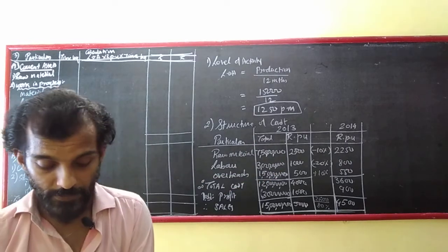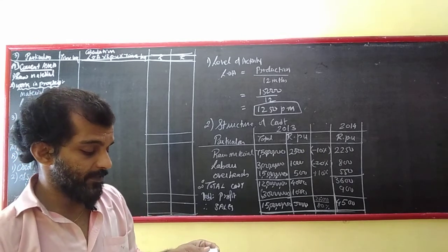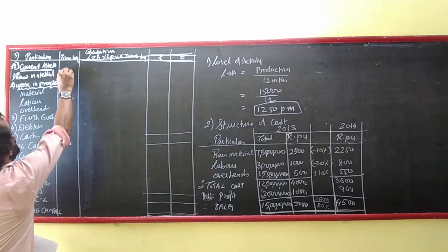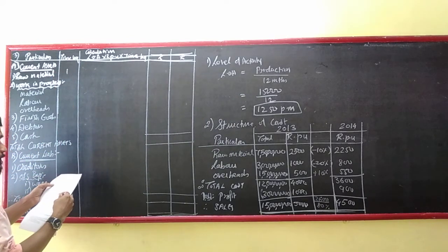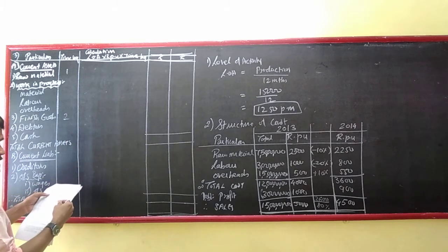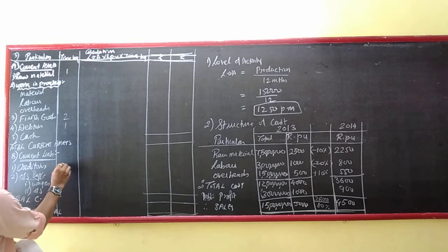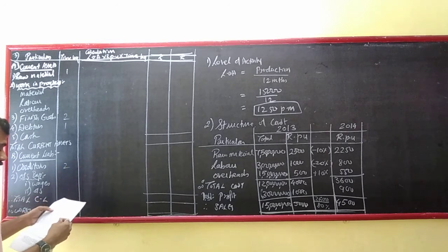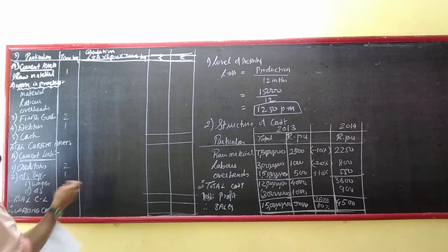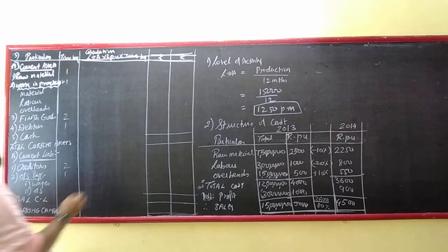Raw material remains in stock for 1 month. Finished goods to remain in warehouse for 2 months. Debtors — customers will enjoy credit. Creditors — suppliers' pending payment 1 month. Processing period 1 month. And cash payments 30 lakhs.